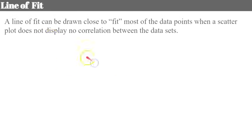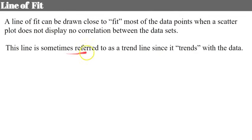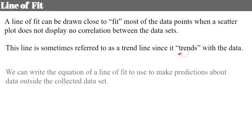Now let's talk about line of fit. A line of fit can be drawn close to fit most of the data points when a scatter plot does not display no correlation between the datasets. So if you have a scatter plot showing no correlation with points scattered everywhere, you would not draw a line of fit. The line is sometimes referred to as a trend line, and we can write its equation to make predictions about data outside the collected dataset.